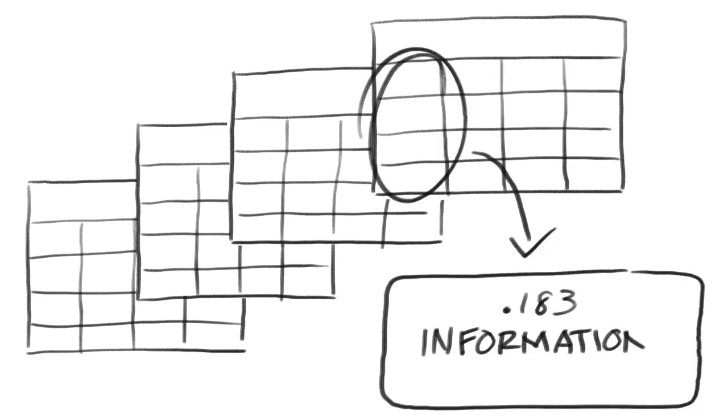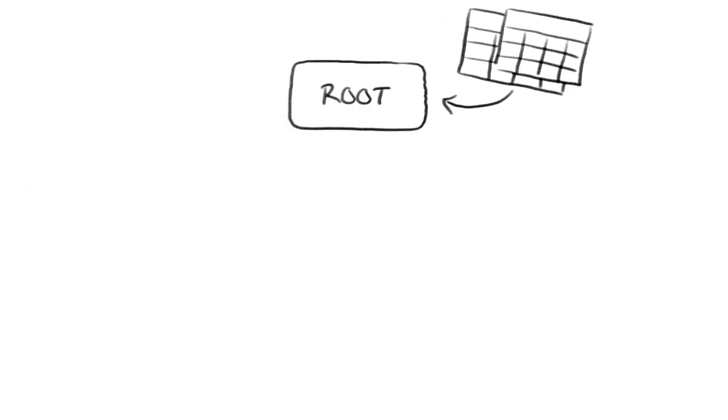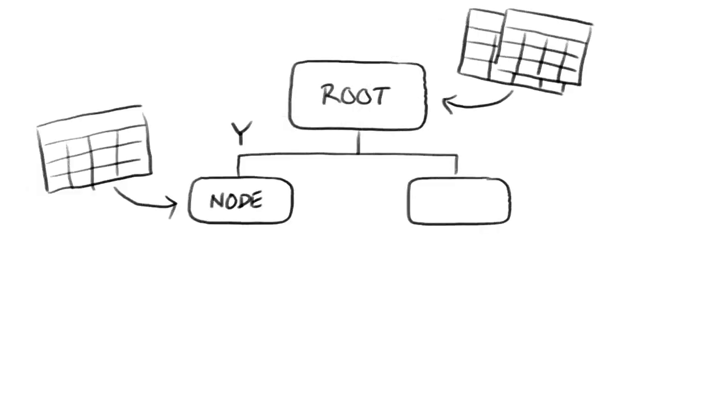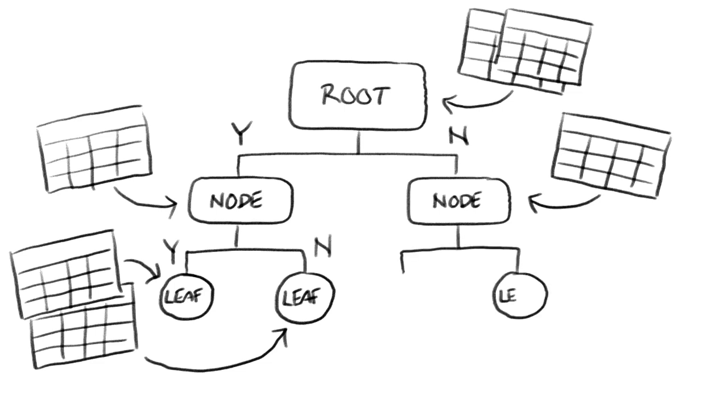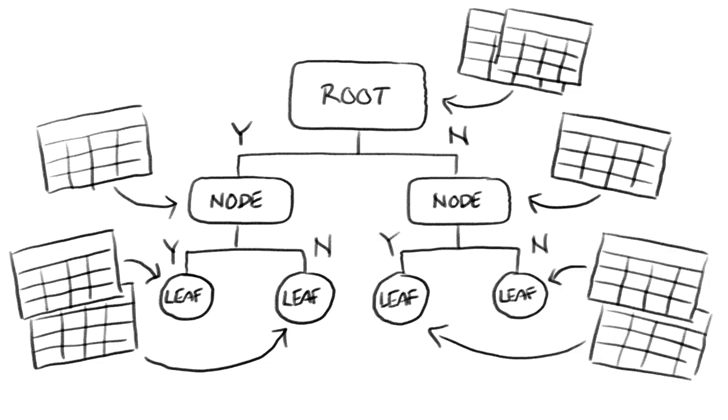Once we find the most useful question to ask, we split the data using this question. We then add a child node to this branch and it uses a subset of data after the split. Again, we calculate the information gain to discover the best question for this data. Rinse and repeat until there are no further questions to ask and this node becomes a leaf which provides the final prediction.